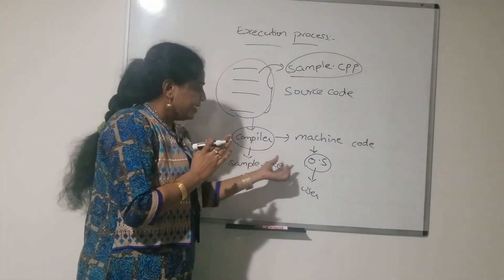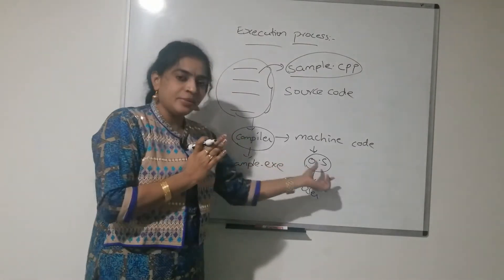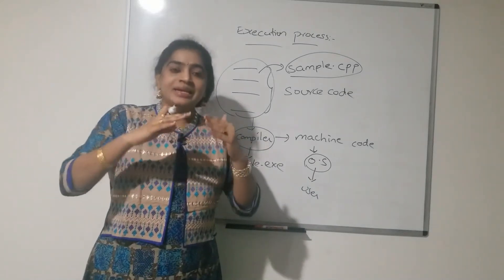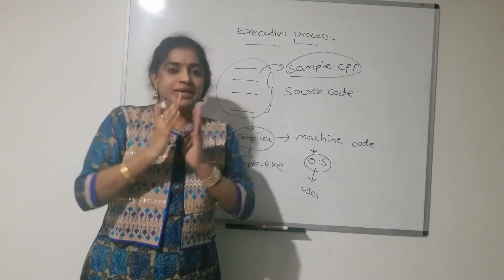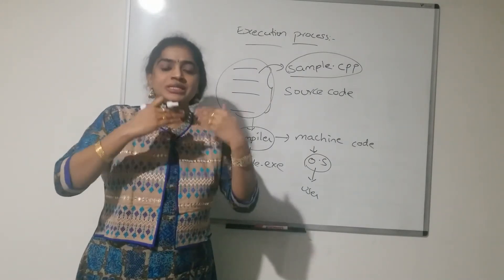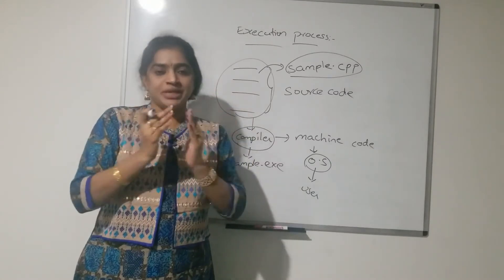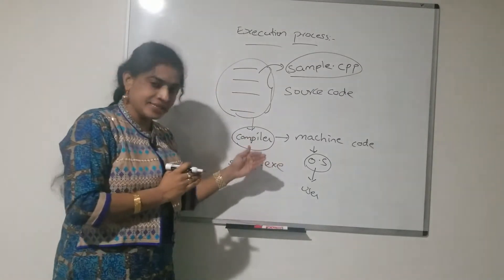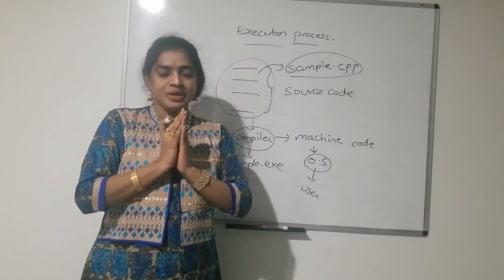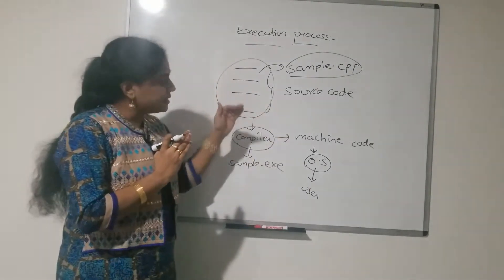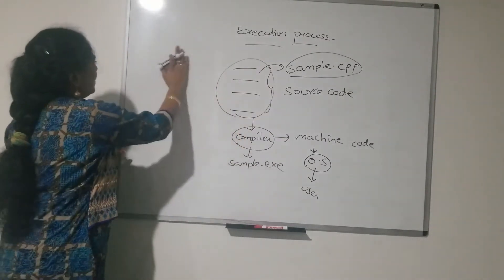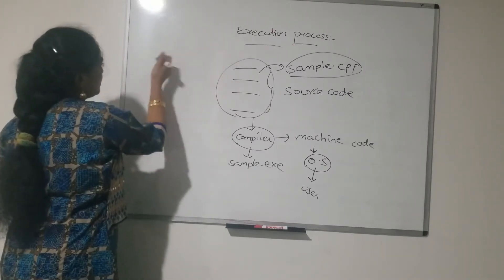This executable code is understandable to the operating system. The operating system then executes our program and displays the result to the user. Like this, internally the execution process is done in C++. Now let me write a sample program.